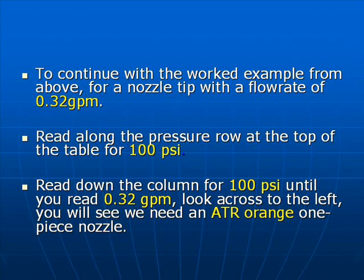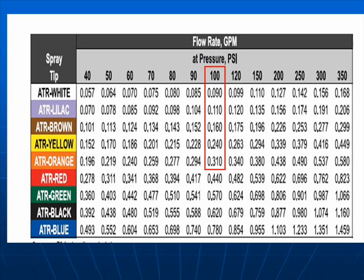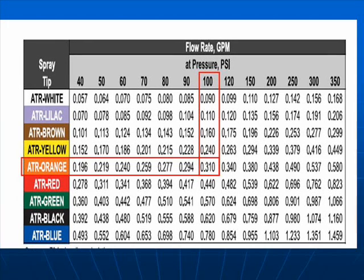Here you'll see the nozzle chart. At 100 psi, look down the column until you see 0.310 gallons per minute, shown in the red box. Then move your finger to the left and you will see an ATR orange nozzle tip. This will give us 0.310 gallons per minute at 100 psi.